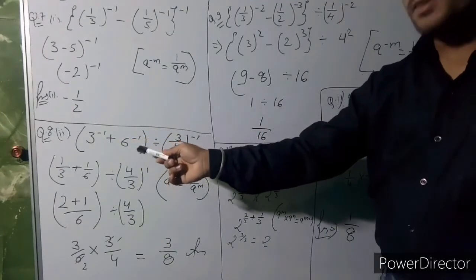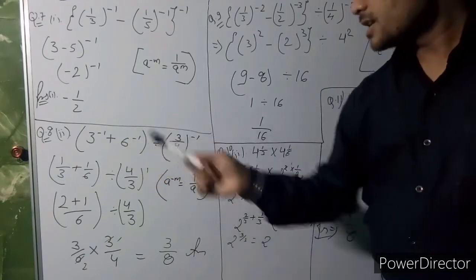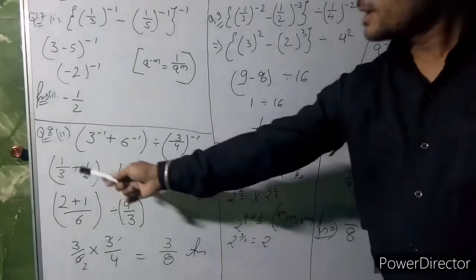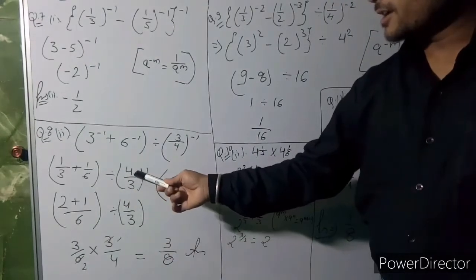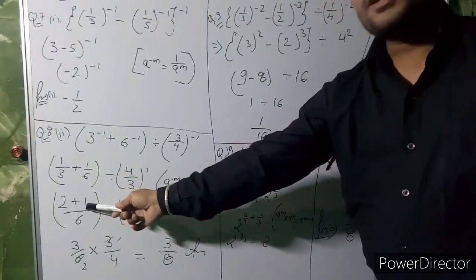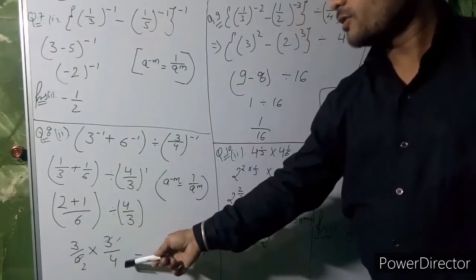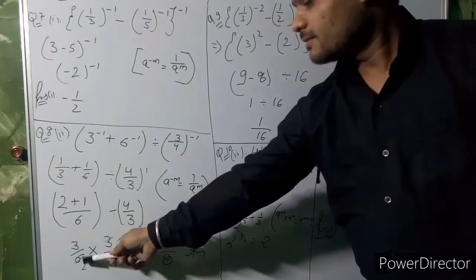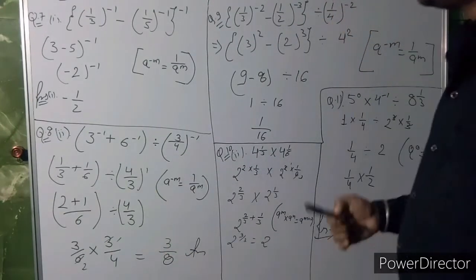Second question: evaluate 3⁻¹ + 6⁻¹ divided by (3/4)⁻¹. Again we apply the same law: a⁻ᵐ = 1/aᵐ. So 3⁻¹ becomes 1/3, 6⁻¹ becomes 1/6, and (3/4)⁻¹ becomes 4/3. Solving by LCM gives 2+1 upon 6, divided by 4/3, which equals 3/6 into 3/4, giving the answer 3 upon 8.